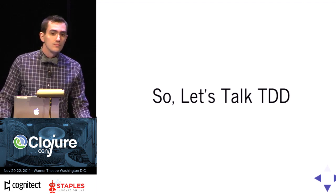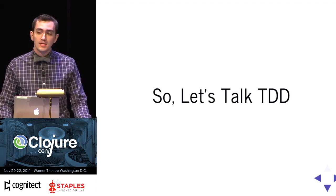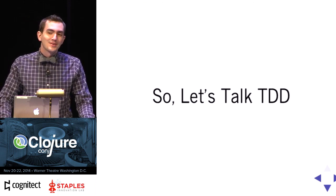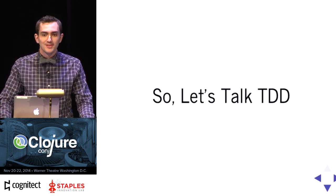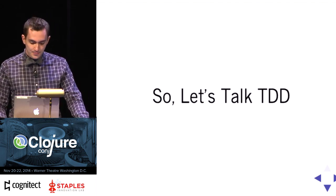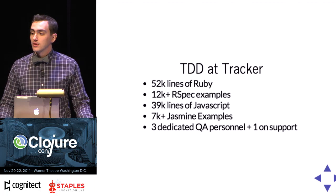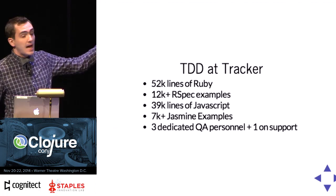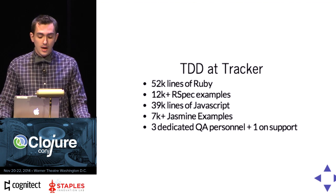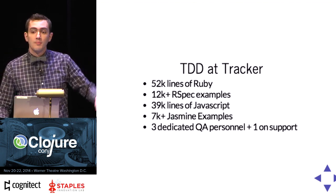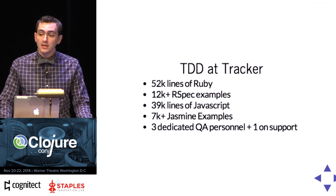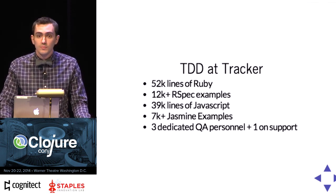Who here uses TDD? Good number. Who here doesn't use TDD but still has a very good unit and integration test suite? The other half of the room — that's good. And who here has pushed a bug to prod in the last month or so? Yeah. So Pivotal Tracker and Pivotal Labs in general is very opinionated about TDD and about pairing. We have three people dedicated to hunting down bugs and regression testing in an environment where we only have ten engineers give or take. That's a surprisingly high ratio. And yet we still push bugs to prod. Why is that?